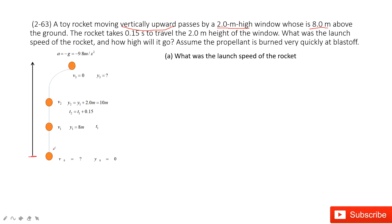That means the rocket arrives at the bottom of the window at position 8 meters. Then it keeps going to the top of the window at position y2. The y2 should be y1 plus 2 meters, which is 10 meters.